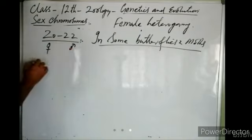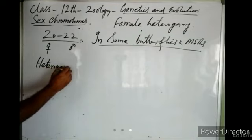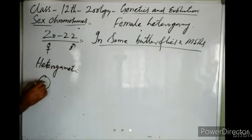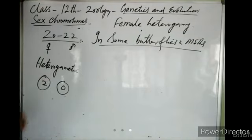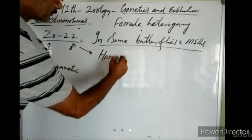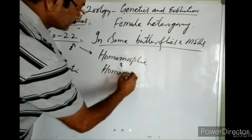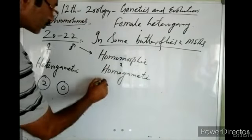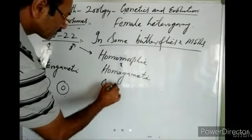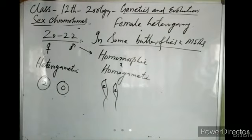In the Z0/ZZ condition, the female is heterogametic and produces two types of ova — one with Z sex chromosome and another without any sex chromosome. The male is homomorphic and homogametic; each sperm has Z sex chromosome. So all sperms are alike.